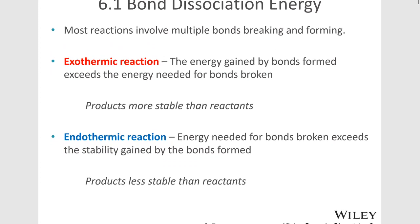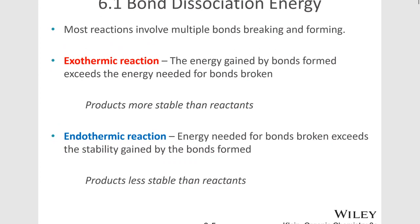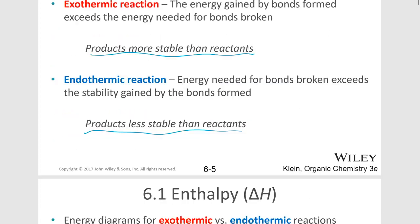Most reactions involve breaking multiple bonds and forming multiple bonds. If the reaction is exothermic, the energy gained by forming the bonds exceeds the energy needed to break the bonds, meaning the products are more stable or lower energy than the reactants. If the reaction is endothermic, the energy needed to break the bonds exceeds the stability gained by forming the bonds, meaning the products are less stable or higher energy than the reactants.